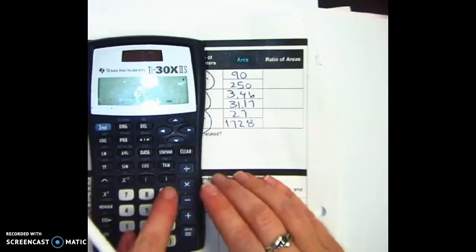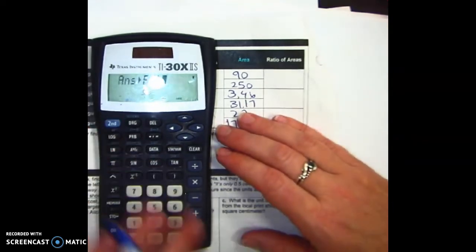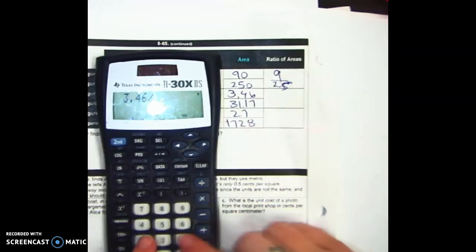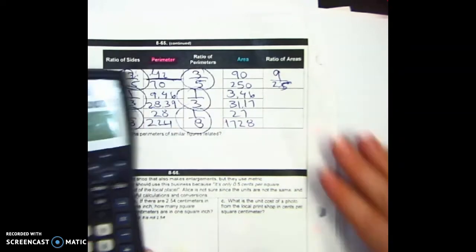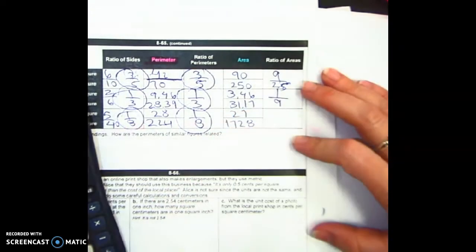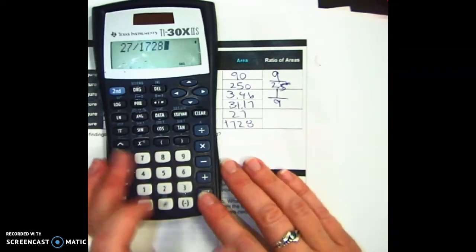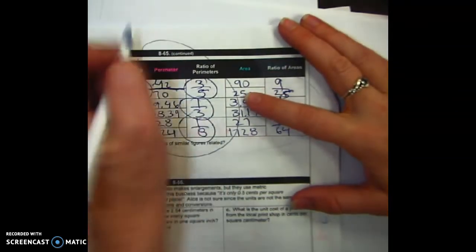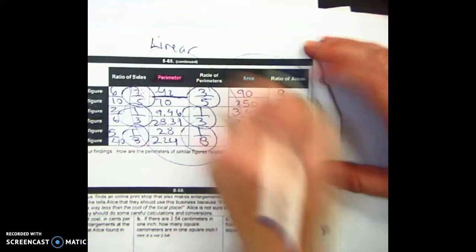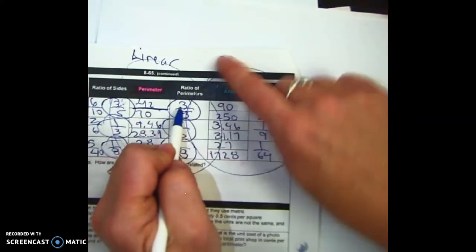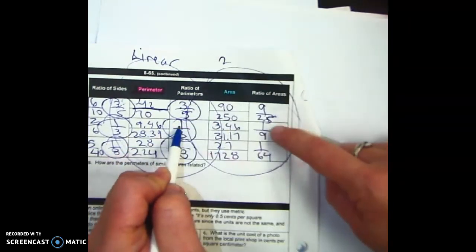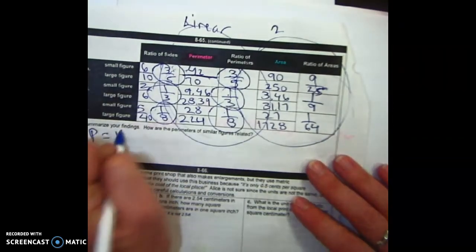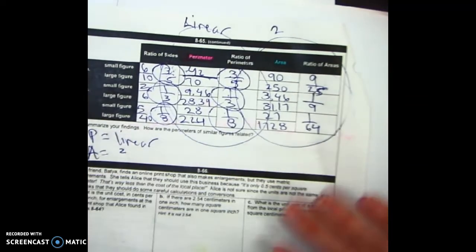Now for the area ratios. 90 divided by 250 gives 9 over 25. 3.46 divided by 31.17 is approximately 0.111, which is one-ninth. And 27 divided by 1728 gives 1 over 64. Here's the key takeaway: perimeter ratios are linear — three-fifths, one-third, one-eighth. Area ratios are squared — 3 squared is 9, 5 squared is 25, giving nine-twenty-fifths; 1 squared is 1, 3 squared is 9, giving one-ninth; and 8 squared is 64, giving 1 over 64. When it's perimeter, it's linear; when it's area, it's squared.